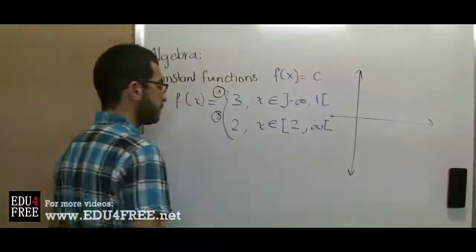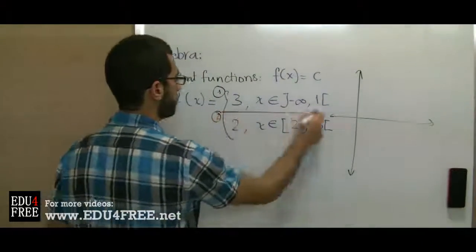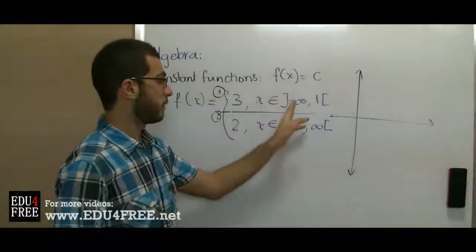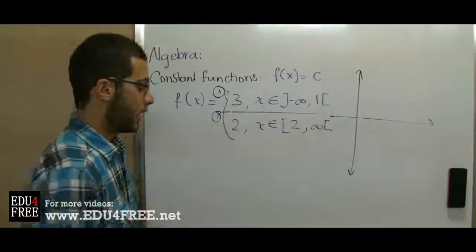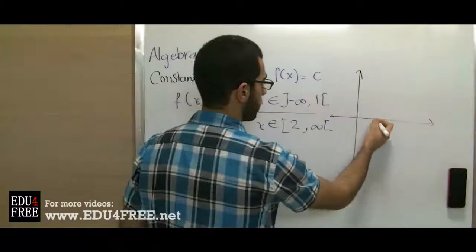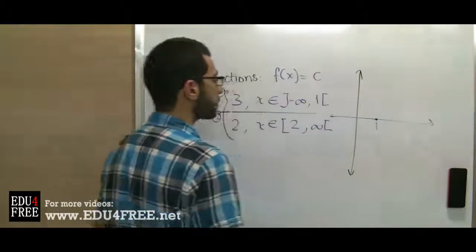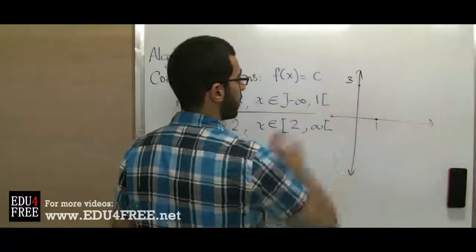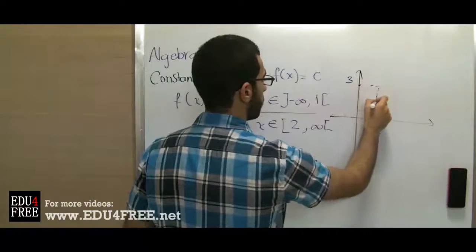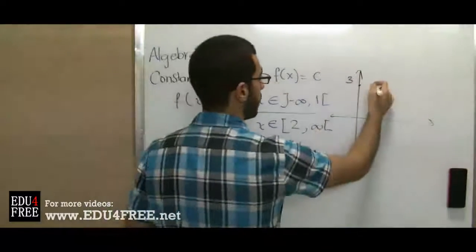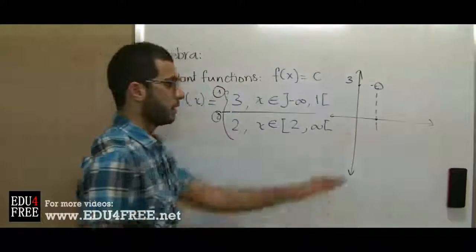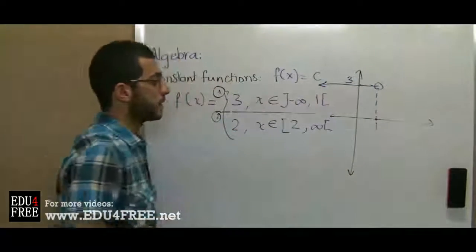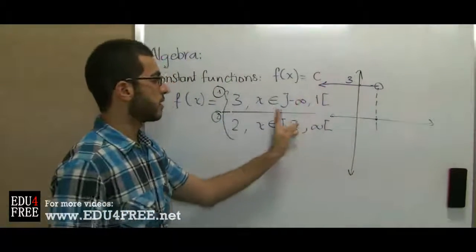We draw our Cartesian plane. Then we take the first part of the function: y will equal 3 so long as x belongs to (-∞, 1) open. First we locate where 1 is on the x-axis, and then we locate where 3 is on the y-axis. That point will be the beginning of our line — it will be open because 1 is not included in the interval — and we draw a ray going left, because the interval extends in that direction.